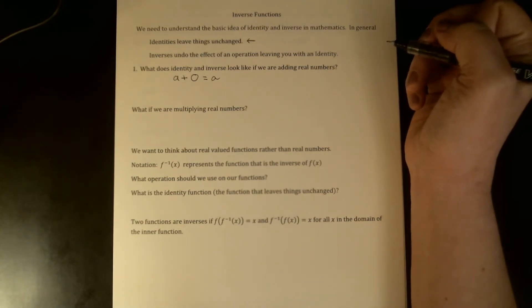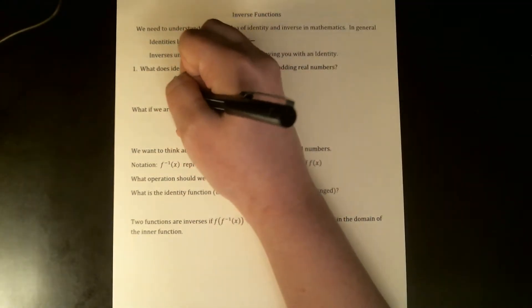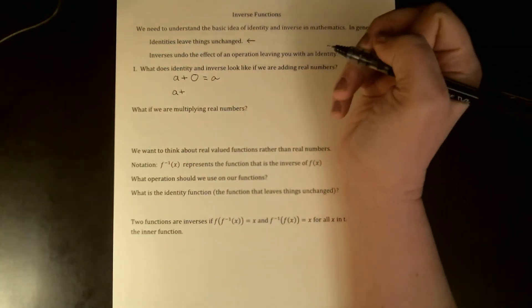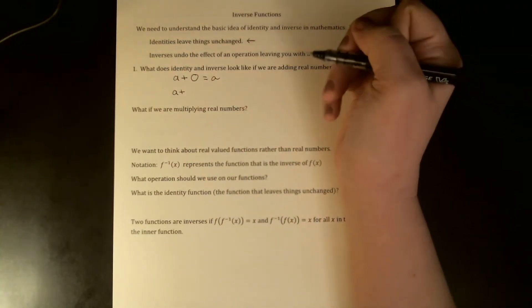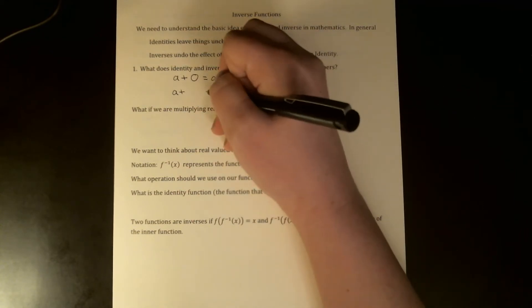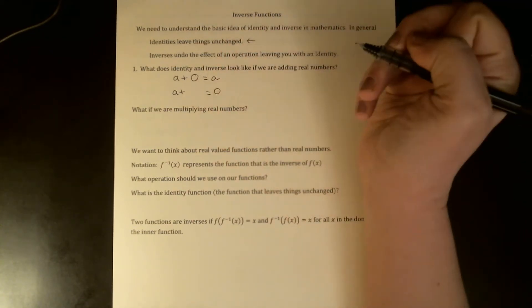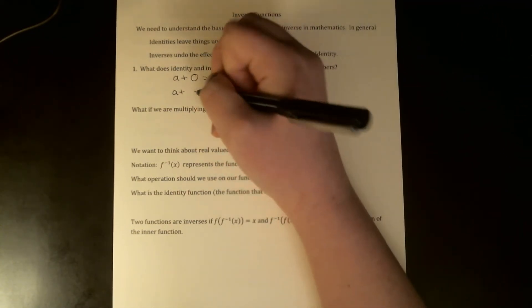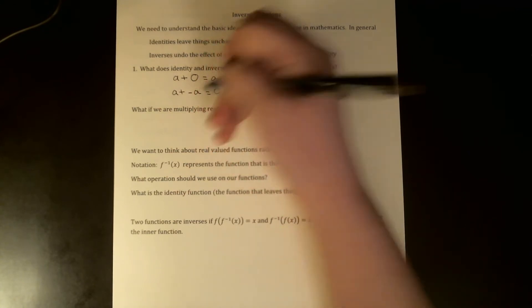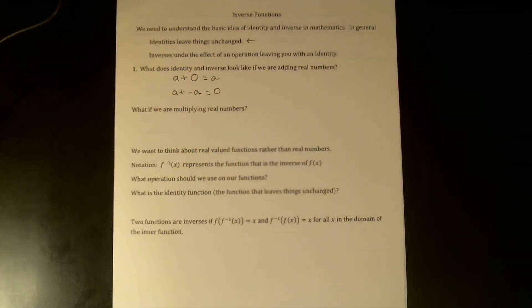Now that I know what an identity looks like when I'm adding real numbers, I can talk about what an inverse would be. The question is: what can I add to a real number that will undo the effect of the addition and get me back to our identity zero? The answer is I need to add the opposite of a. So whatever a is, I add its opposite, and that should get me back to zero.